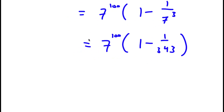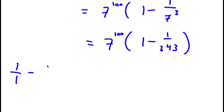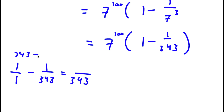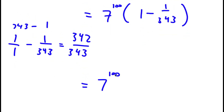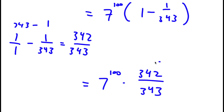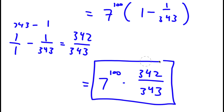Now, 1 minus 1 over 343: converting to a common denominator, that is 343 over 343 minus 1 over 343, which equals 342 over 343. So I have 7 to the power of 100 times 342 over 343, and this is another valid form of the solution.